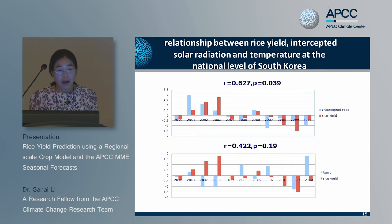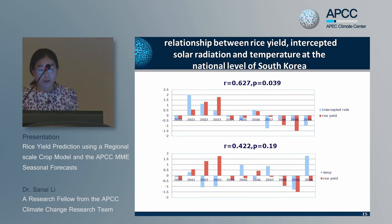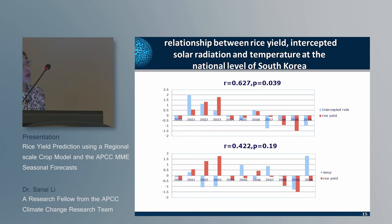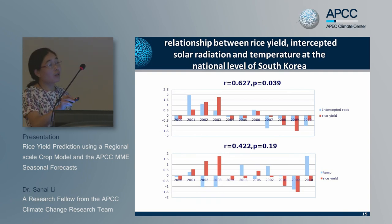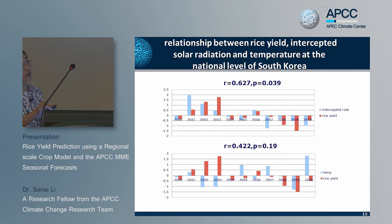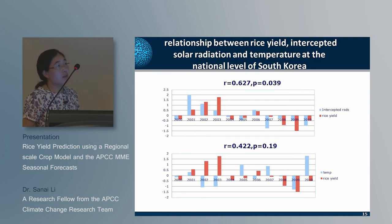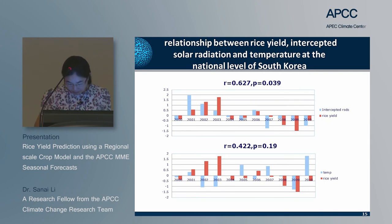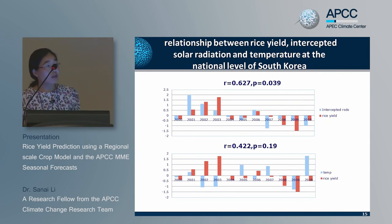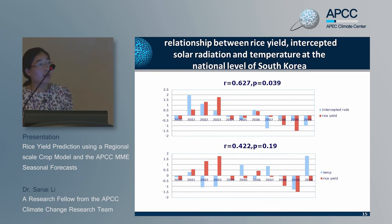Assessing how accuracy of climate variables affects the forecast scale of the crop model: there is a significant correlation between rice yield and intercepted solar radiation for South Korea. However, there is no significant correlation between temperature and rice yield for South Korea. This indicates that solar radiation is an important climate variable for determining rice yield. Additionally, rice yield in South Korea is not sensitive to rainfall, so there is no significant correlation between rice yield and rainfall.